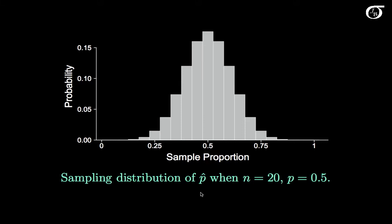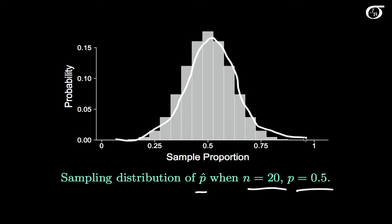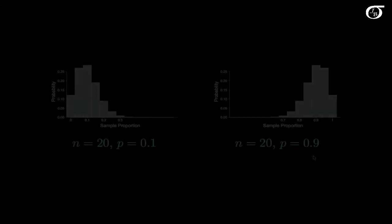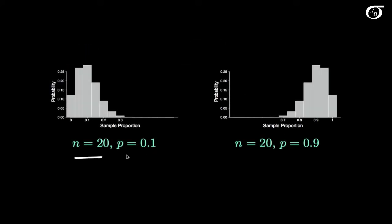Here I've illustrated the sampling distribution of p-hat when n is 20 and p is 0.5. What you might notice is this actually looks reasonably normal. So when p is close to 0.5, the sampling distribution of p-hat will be fairly normal for even smallish sample sizes. But when we're closer to the boundary — closer to 0 or 1 — when n is 20 and the real value of p is 0.1, we see some right skewness in the sampling distribution.